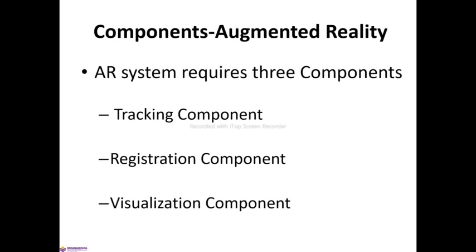The augmented reality system requires three components for these processes. The three components are: tracking component, registration component, and visualization component. The tracking component always tracks the location and orientation of the virtual object in real time environment. The registration component simply registers the coordinates of the virtual component in real time environment. Using the visualization component, we can visualize the virtual object as it is placed in the real-time position.